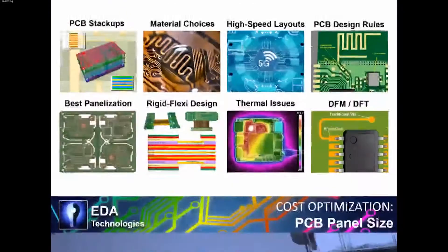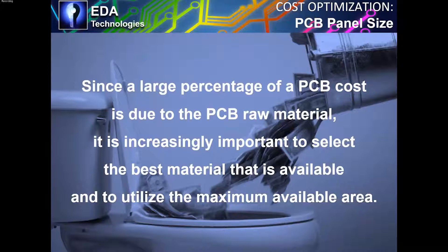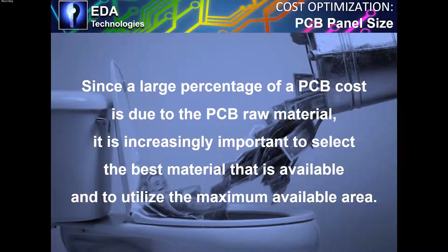Today we're talking about cost optimization. The cost of PCBs is going through the roof, mainly because of the cost of raw materials. A large percentage of your actual PCB cost is the raw material itself, so you need to really optimize the usage of that material — select the best material currently available and then utilize the maximum area on that panel to waste as little as possible. This is very important.